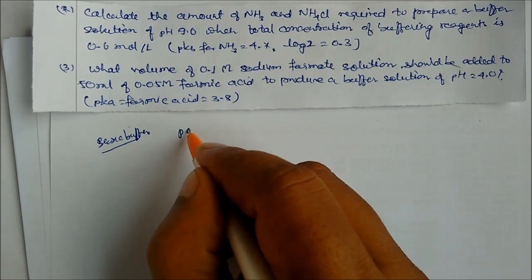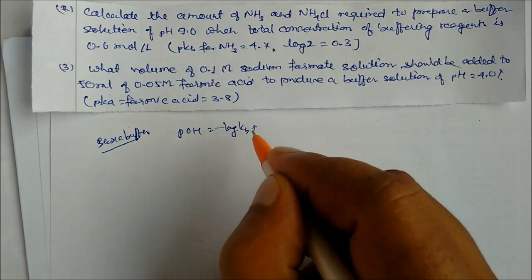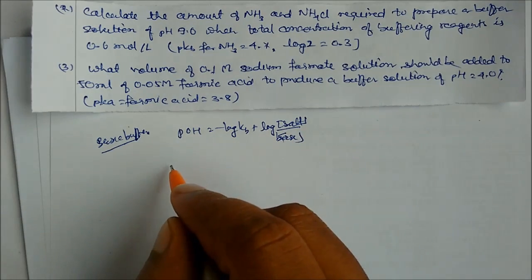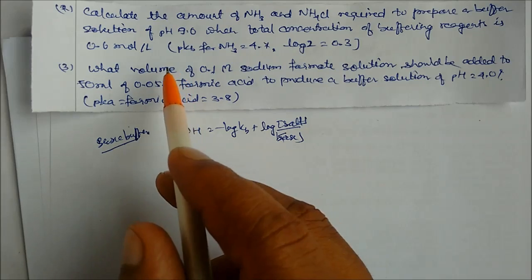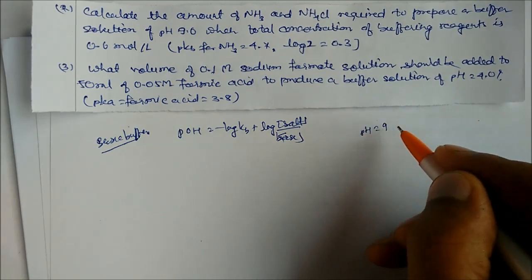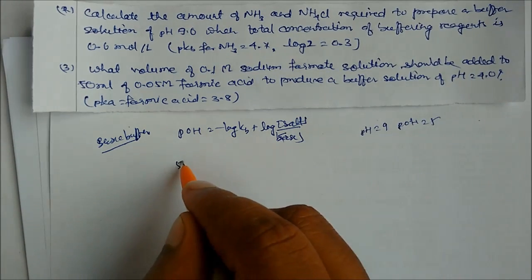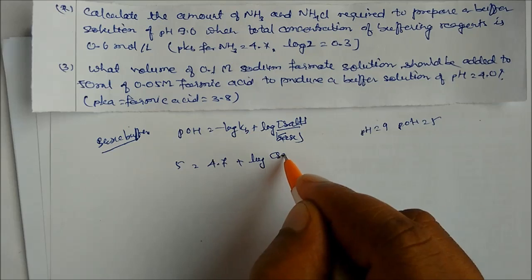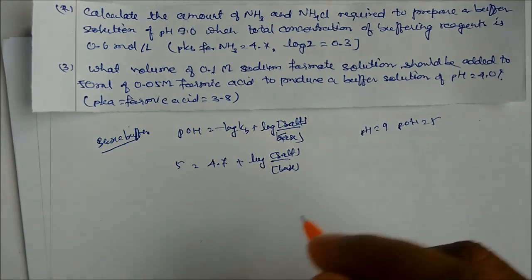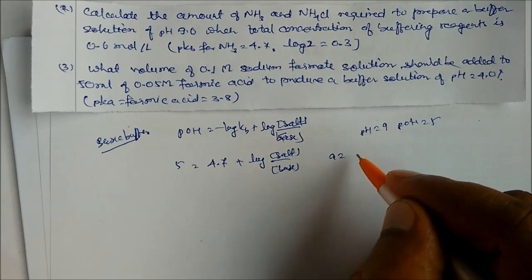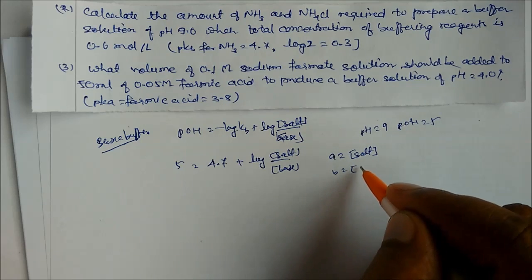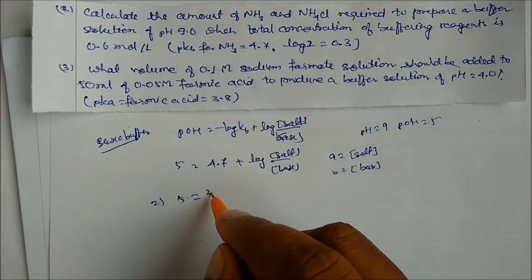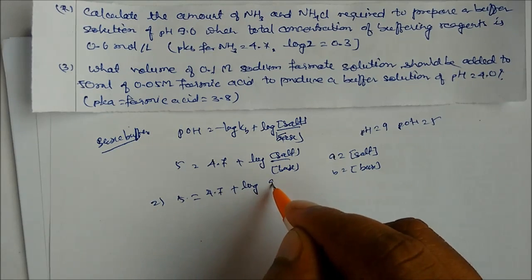For a basic buffer, pOH = −log(Kb) + log([salt]/[base]). pH is 9, so pOH = 14 − 9 = 5. Kb is given as 4.7 (as pKb). Let salt = a and base = b. Then: 5 = 4.7 + log(a/b).